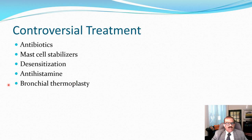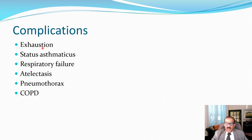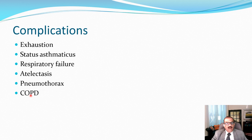Bronchial thermoplasty is offered to the most refractory cases, though it has side effects and is not available in all countries. Complications include respiratory failure, status asthmaticus, atelectasis, pneumothorax, and COPD. Asthma not managed properly becomes increasingly irreversible — practically becoming chronic obstructive pulmonary disease. There may be actual overlap of asthma and COPD, but the key point is that poorly controlled asthma progresses to irreversible airway obstruction.